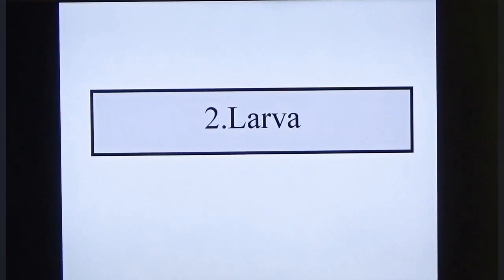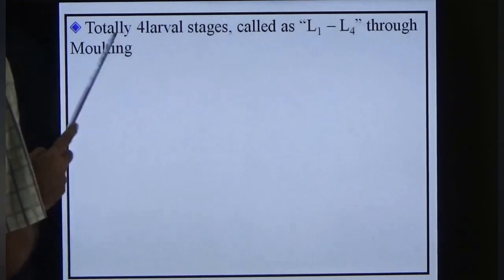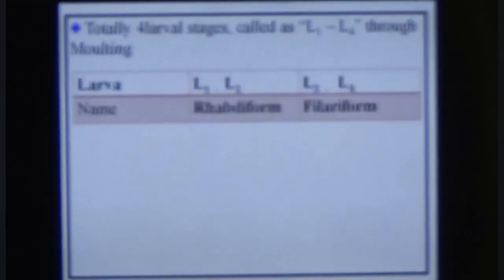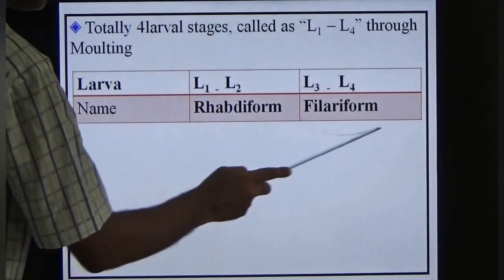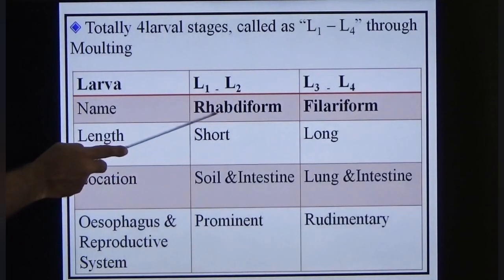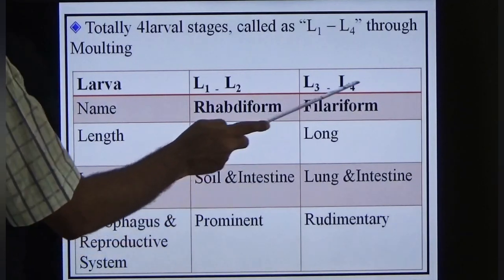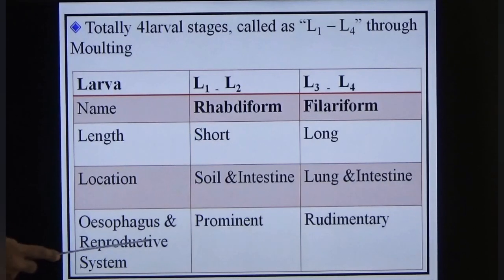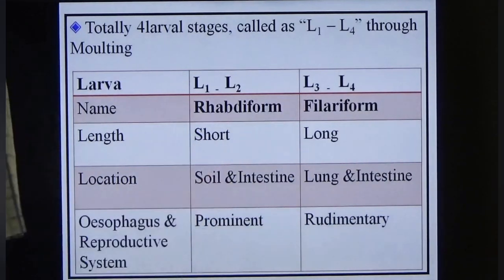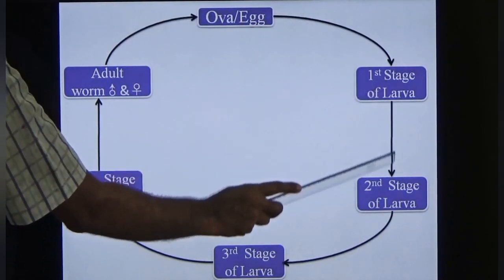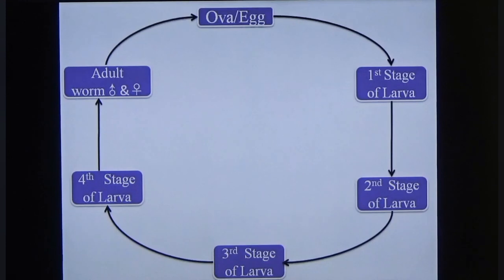Regarding larval stages: there are four larval stages, L1–L4, differentiated through molting. L1 and L2 are called rhabditiform larvae (short, found in soil and intestine, prominent reproductive system). L3 and L4 are filariform larvae (long, found in lungs, intestine, esophagus, rudimentary reproductive system). In Ascaris, L1 and L2 develop in soil, L2 to L3 and L3 to L4 in the lungs, and L4 to adult in the intestine.